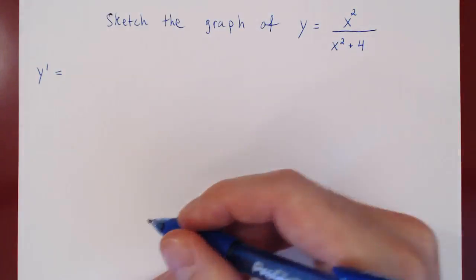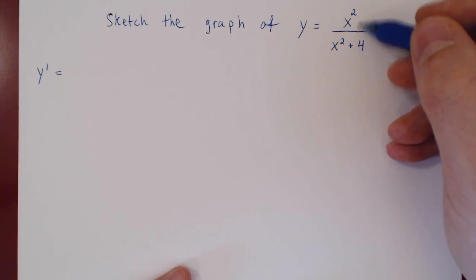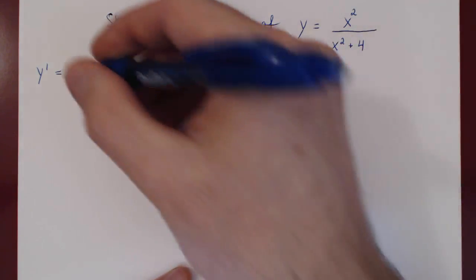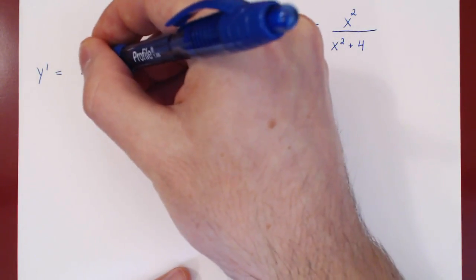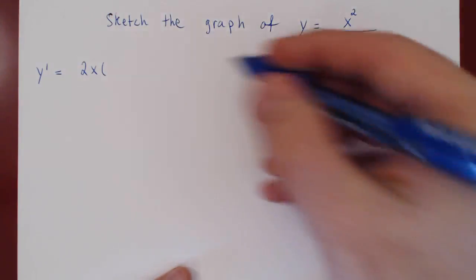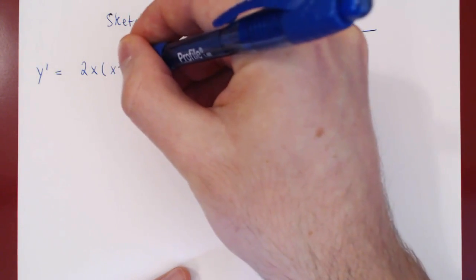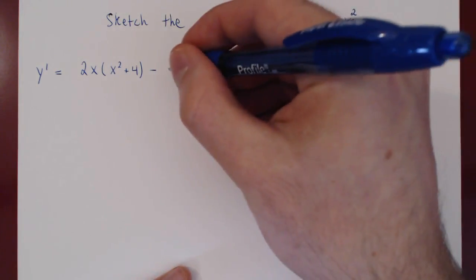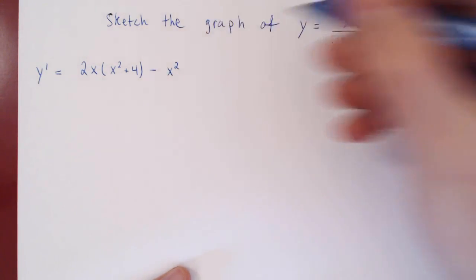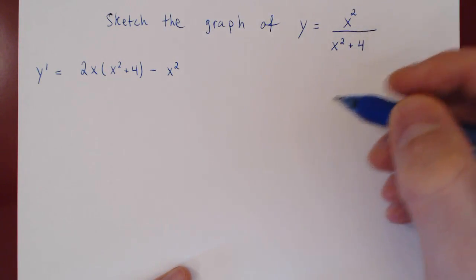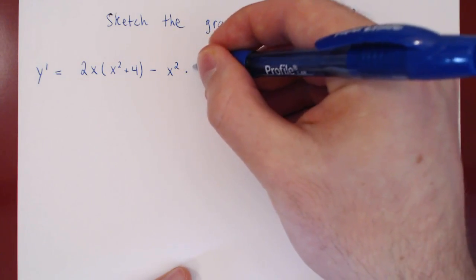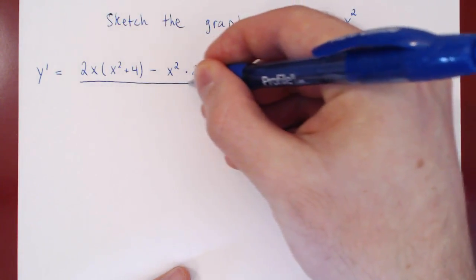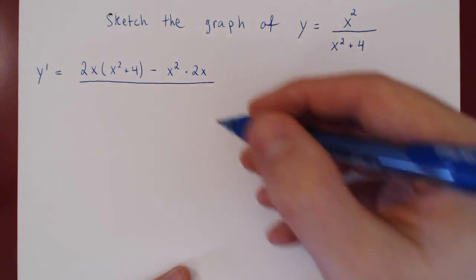Let's find the first derivative. As we have a quotient, we have to use the quotient rule. So we'll get the derivative of x squared, which is 2x, times x squared plus 4, minus x squared times the derivative of x squared plus 4, which is 2x, over x squared plus 4, all squared.